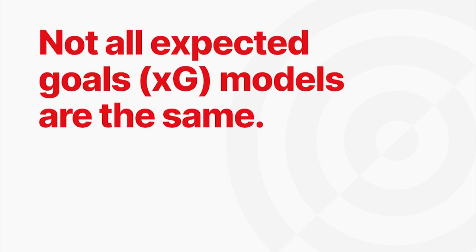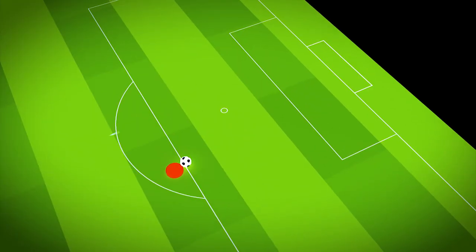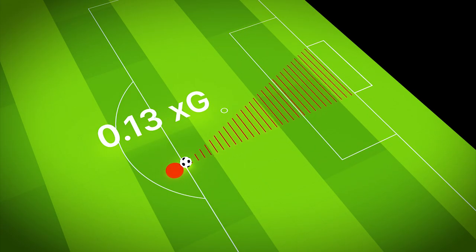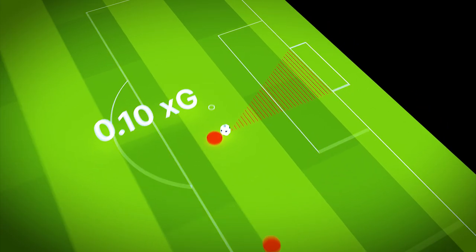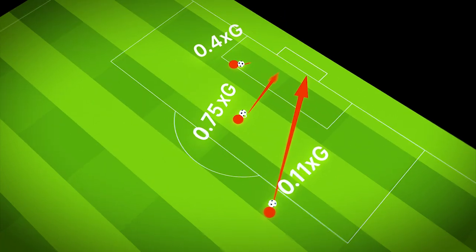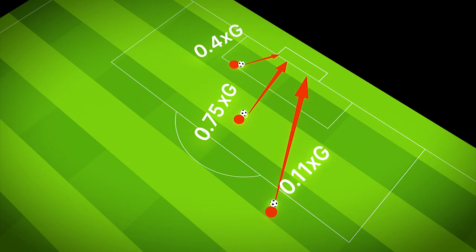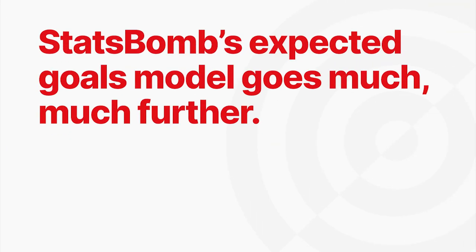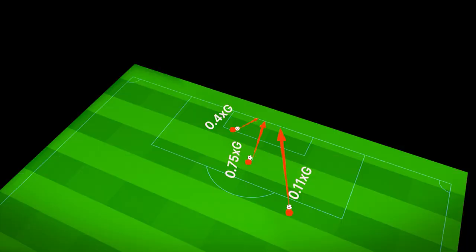Not all expected goals models are the same. While most include the basics like the shot location and angle, the body part used to shoot, the type of pass received and the type of attack, Statsbomb's expected goals model goes much much further.